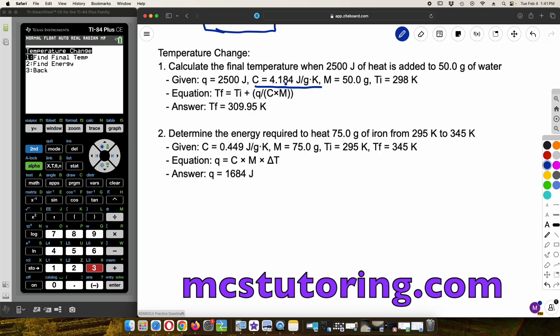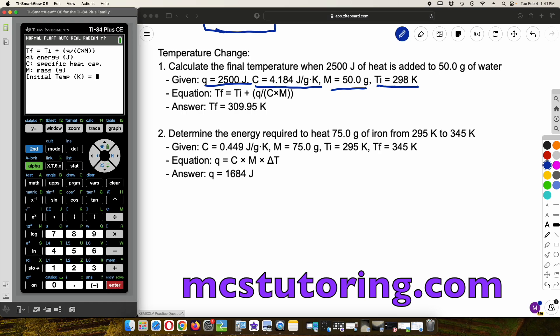C is 4.184 joules per gram Kelvin. And M is 50 grams. Temperature initial is 298 K. This is going to be huge. So calculate final temperature. Okay. So it's going to be giving us a lot. So T sub F means temperature final equals T sub I. I tried to make it a subscript, but I don't know how to do that. But it's temperature initial plus Q divided by C times M. And it shows Q is energy in joules. C is the specific heat capacity of whatever we're dealing with here. In this case, it's water. And then M is mass in grams.